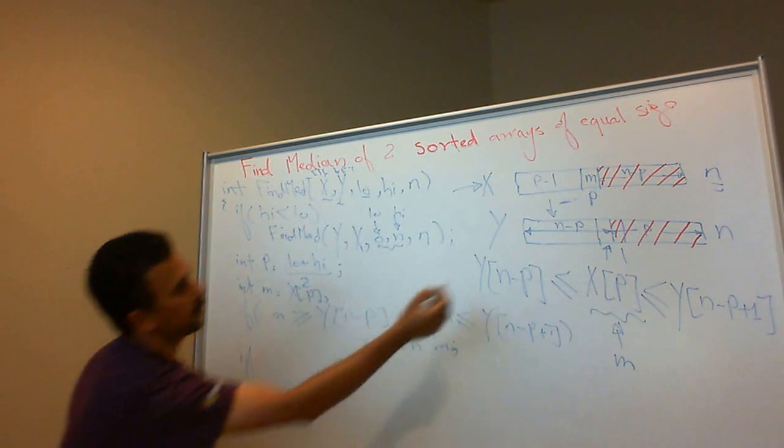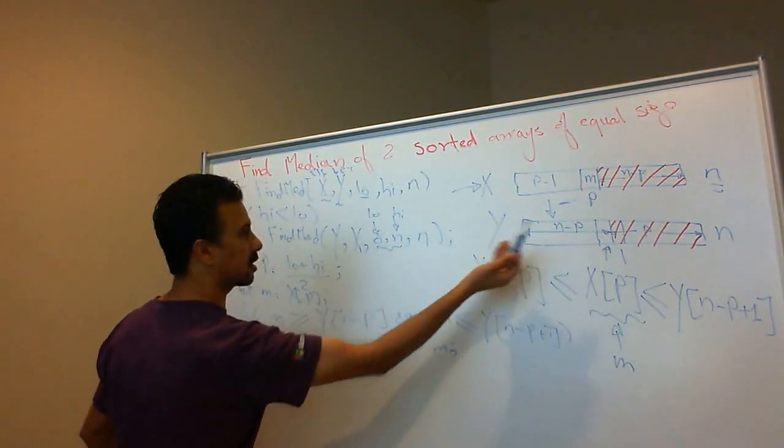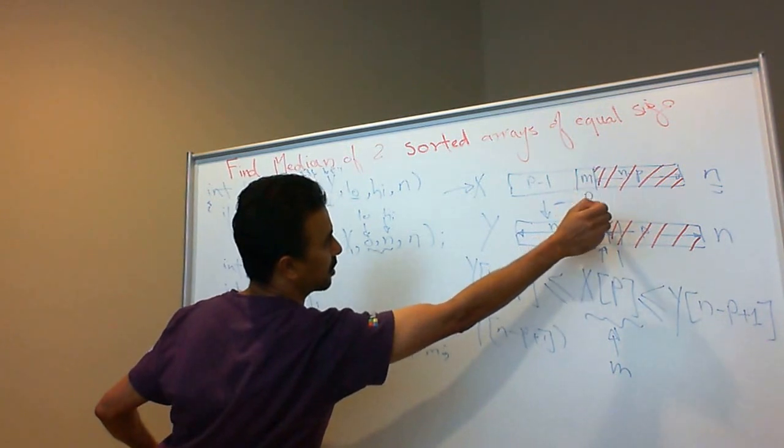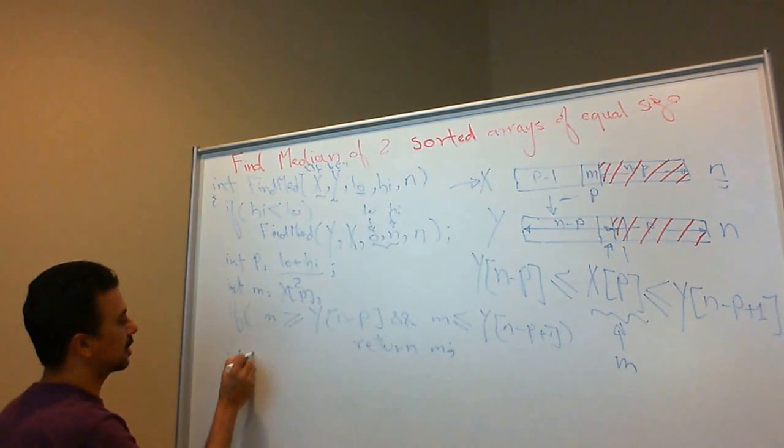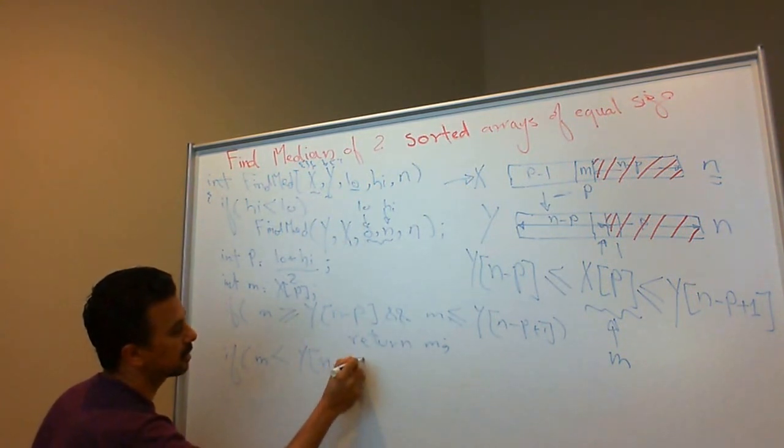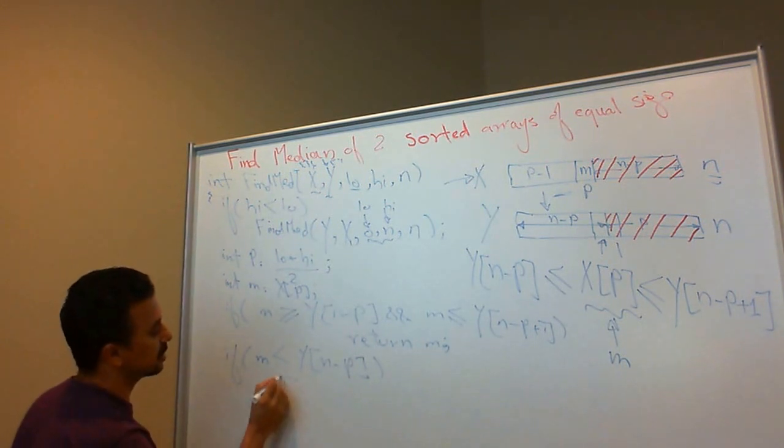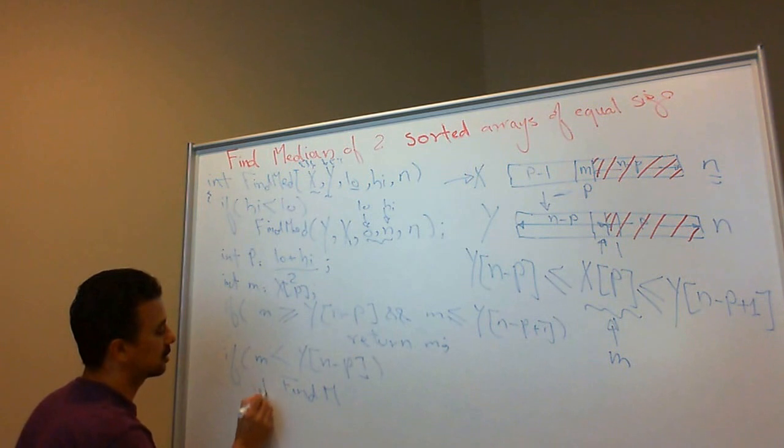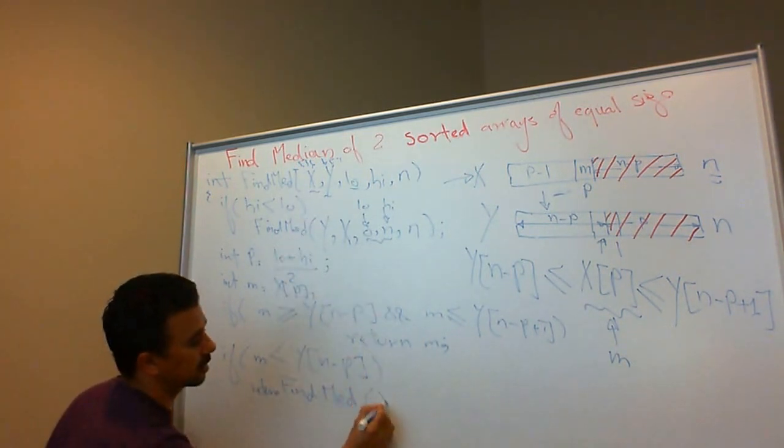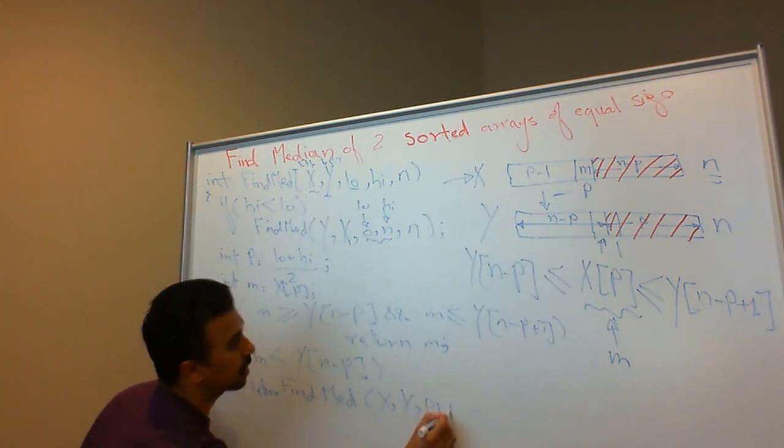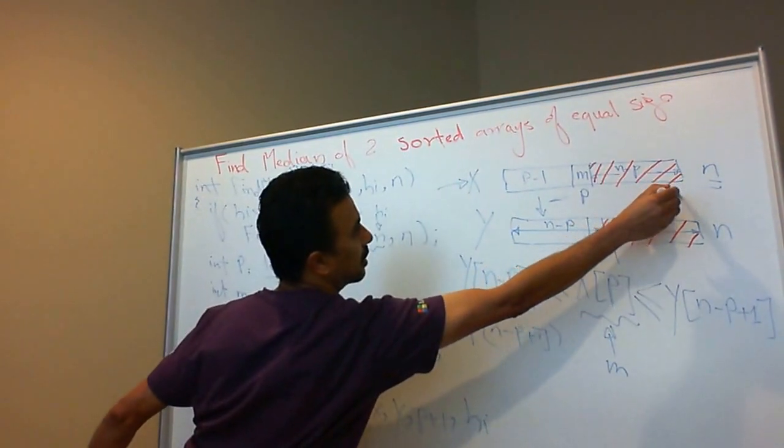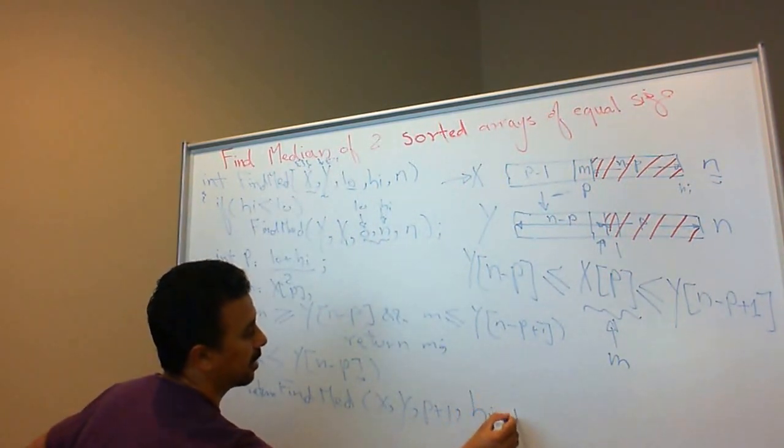But let's deal with other cases. If m actually got shifted to the left, that means I need to search the left side of x, left of the value that I guessed. Let's write that first. If m less than y[n-p], then I'm going to return FindMedian(x, y, p+1, high, n). I'm going to search from p+1 all the way up to high, and I pass n.